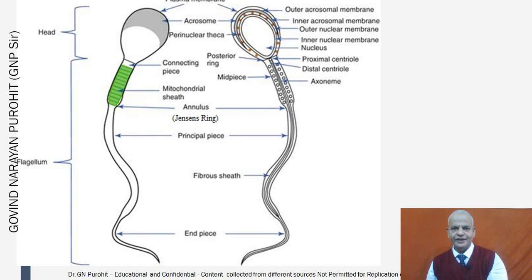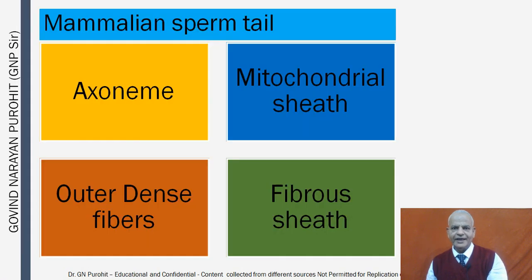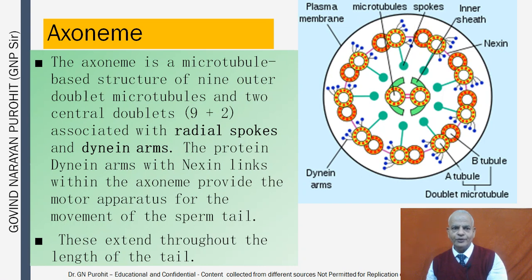The mammalian sperm tail has an axoneme and mitochondrial sheet, outer dense fibers, and a fibrous sheet. The axoneme is a microtubule-based structure of nine outer doublet microtubules and two central doublets — a nine-plus-two arrangement. You can see the two central microtubules and the nine outer doublets in the diagram.